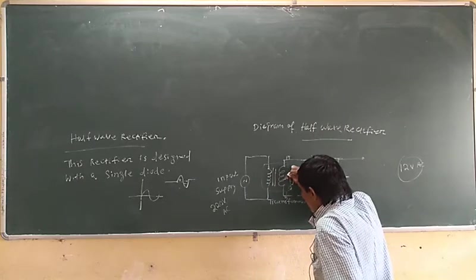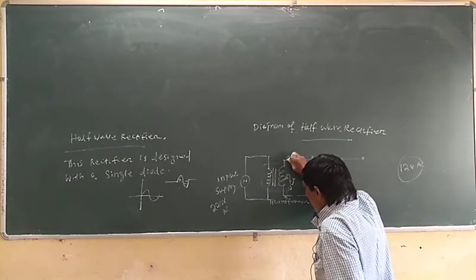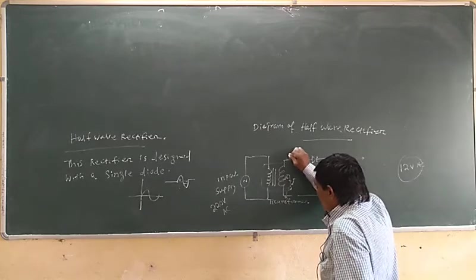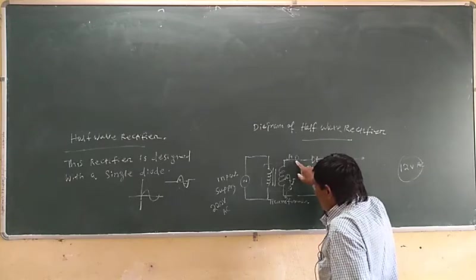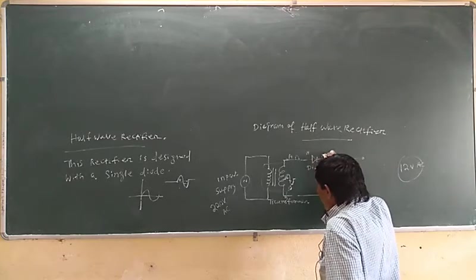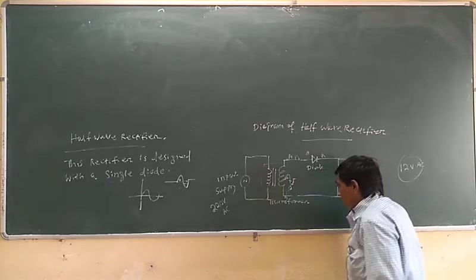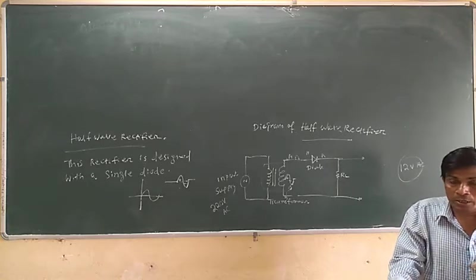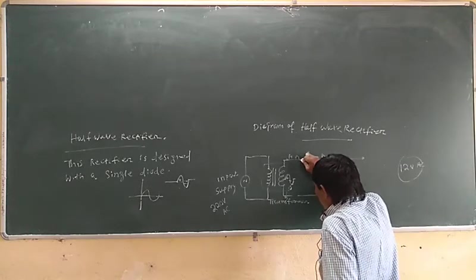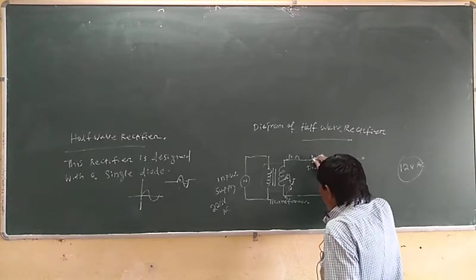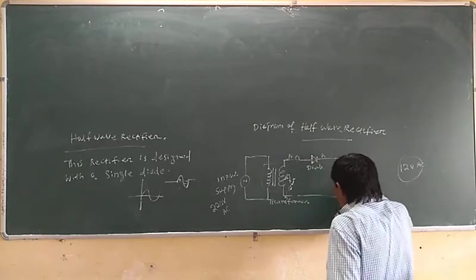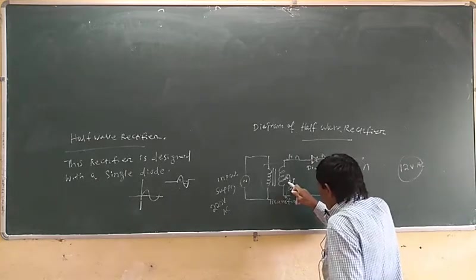When the positive half cycle reaches point A, at that particular time the negative half cycle reaches point B. This positive half cycle is connected to the anode point of the diode. When the anode point gets positive, the diode will be forward biased and it passes the half cycle. This forward biased half cycle passes across the PN junction diode and we get the positive half cycle at the output.